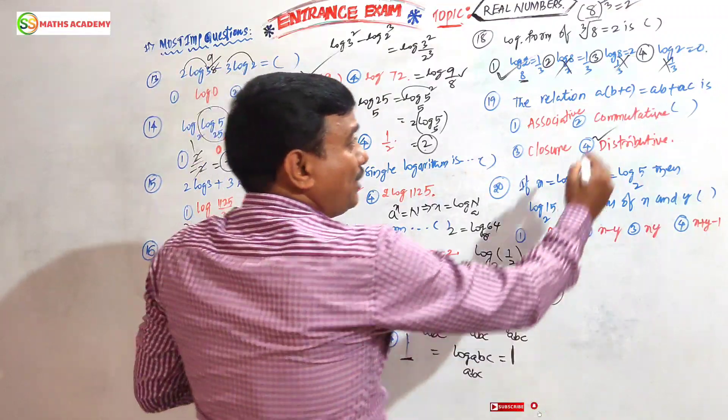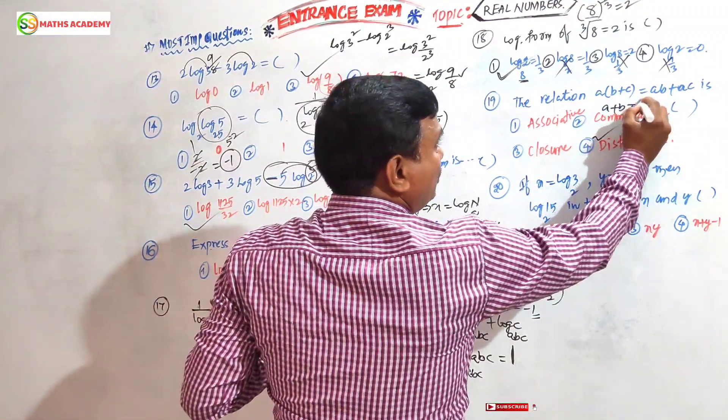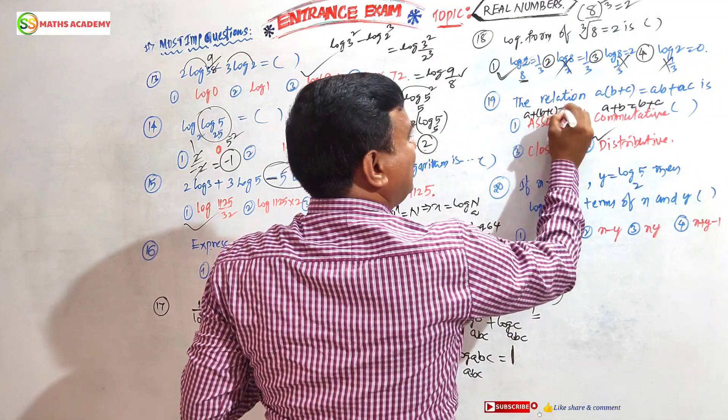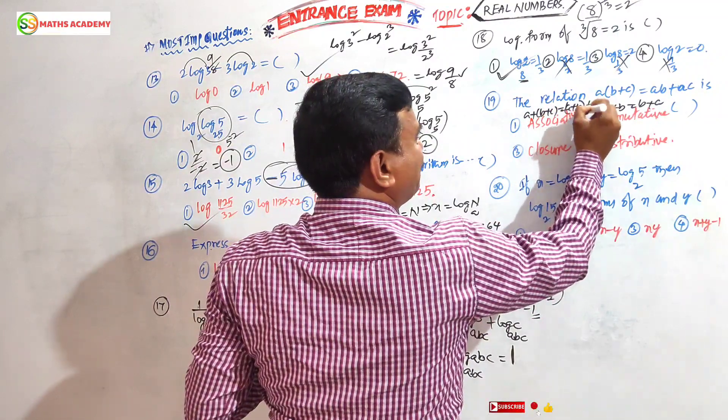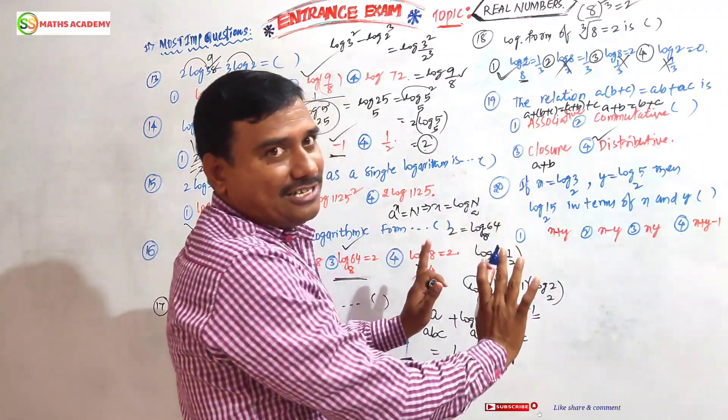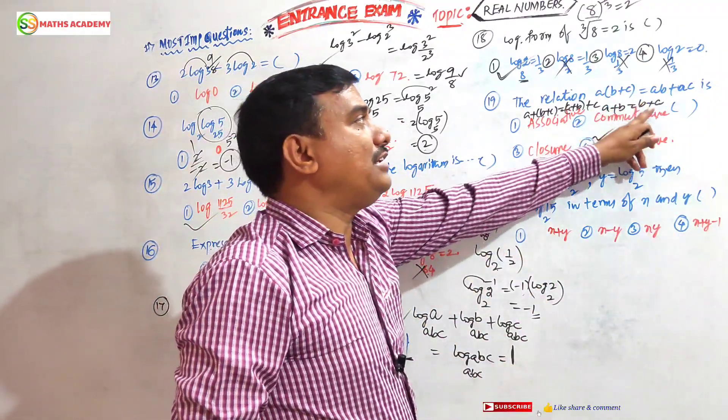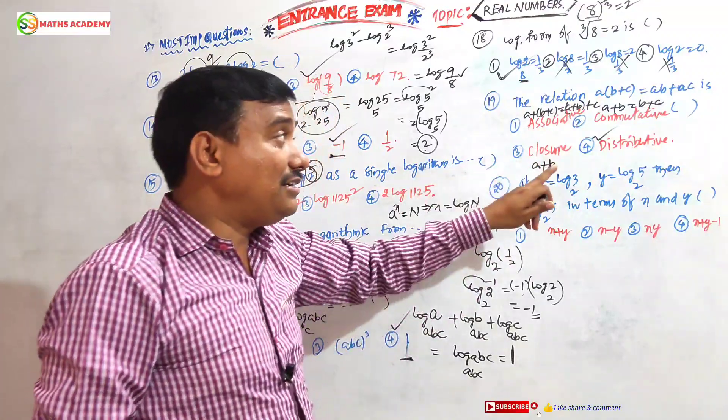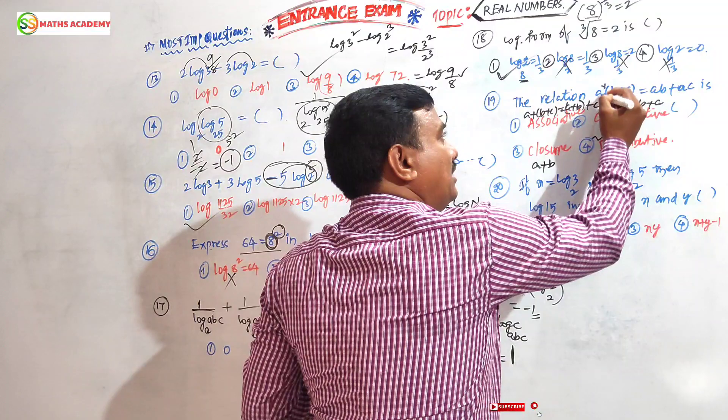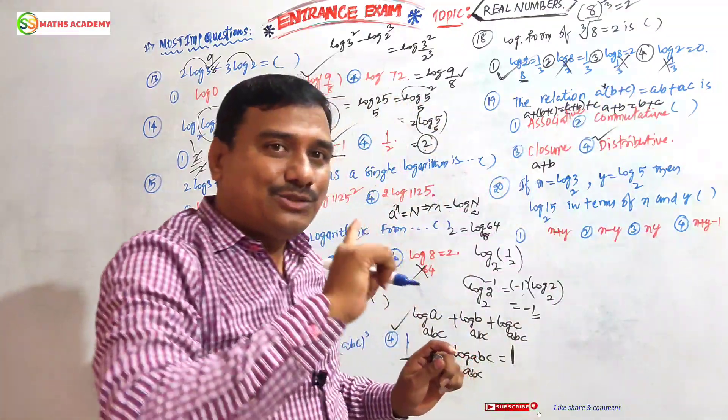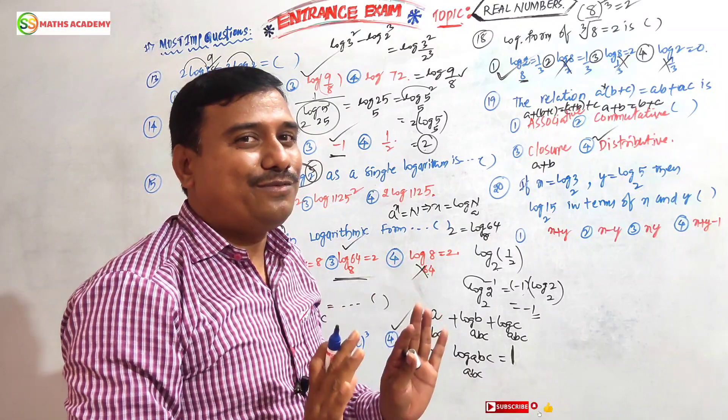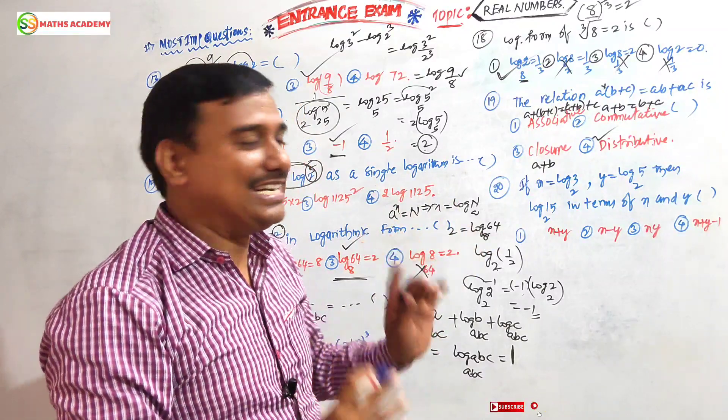This is the answer. In this video I told you - commutative: a+b equals b+a. Associative: a+(b+c) equals (a+b)+c. Closure property: a+b under addition or multiplication. But distributive means two signs will be there - multiplication and addition. So a is distributed two times. That's important - four properties I covered in one question.